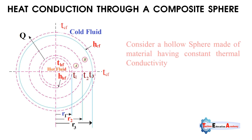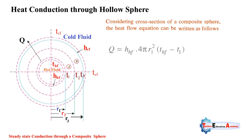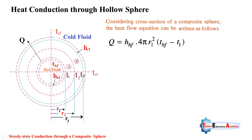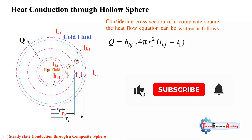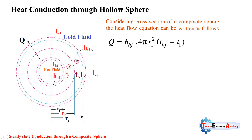Consider a hollow sphere made of material having constant thermal conductivity, which is constant throughout the heat transfer. We are considering parameters hhf and hcf: hhf is the heat transfer coefficient for hot fluid and hcf is the heat transfer coefficient for cold fluid. For example, inside a boiler the steam is the hot fluid, and outside the atmospheric air is the cold fluid.